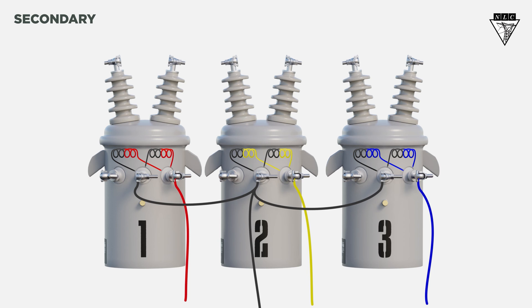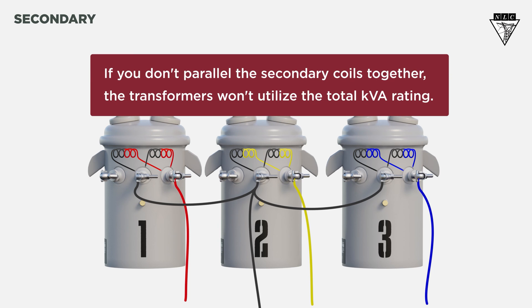Paralleling the secondary coils is necessary when only two secondary bushings are used. If you don't parallel the secondary coils together, the transformers won't utilize the total KVA rating.